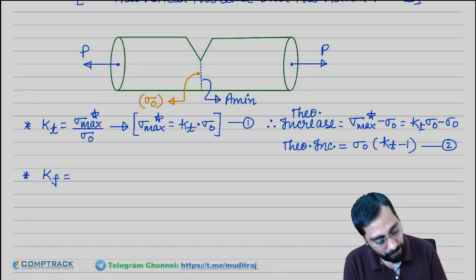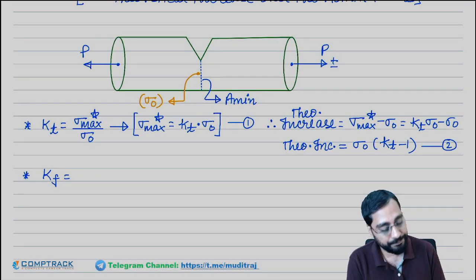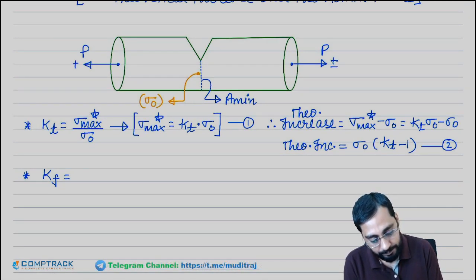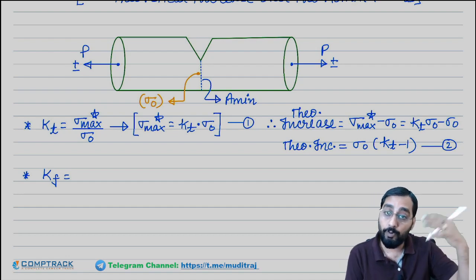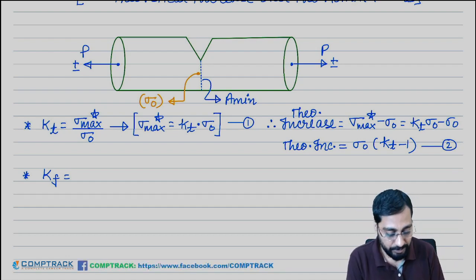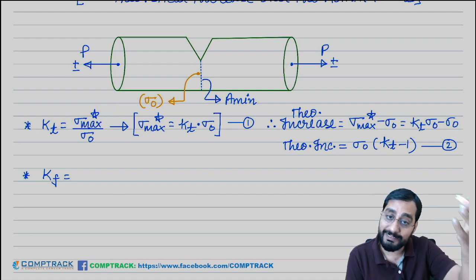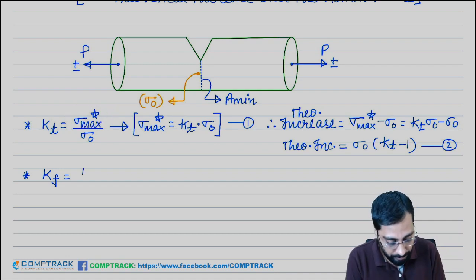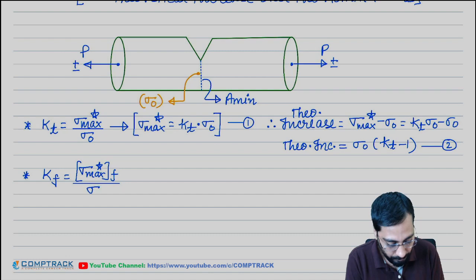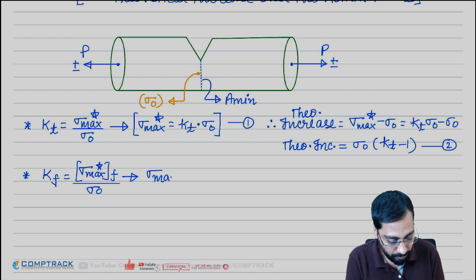Now, when loading is actual or fluctuating, the stress will go even more than the static case. The maximum stress under fatigue loading will occur over the nominal stress. So maximum stress under fatigue loading will become KF times sigma naught.